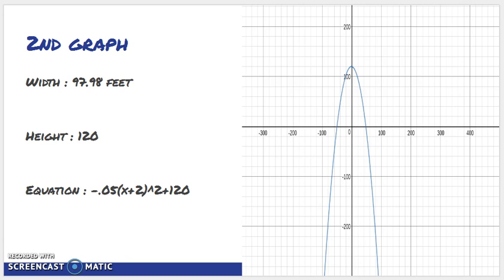The width of the second graph was 97.98 feet. It had a max height of 120 feet and the equation is -0.05(x+2)²+120.